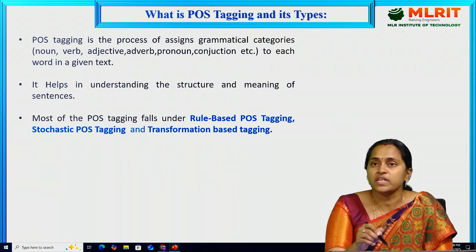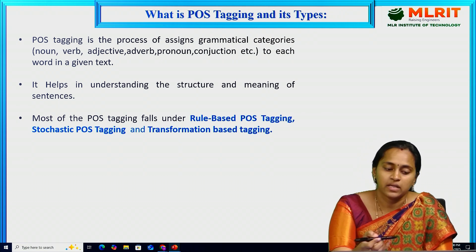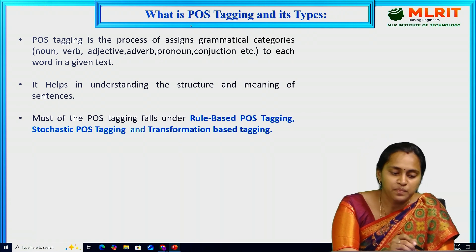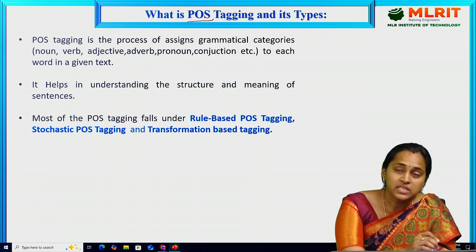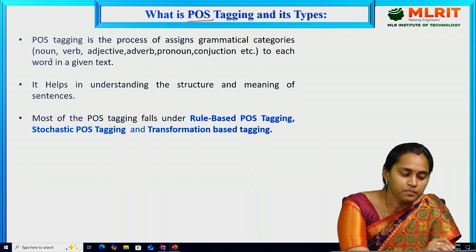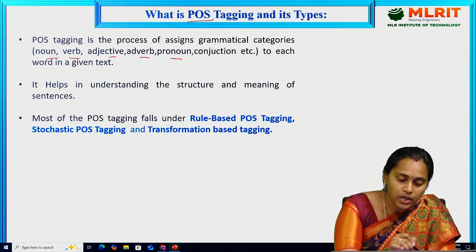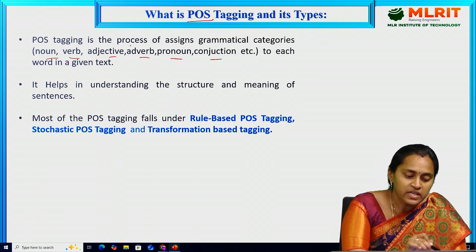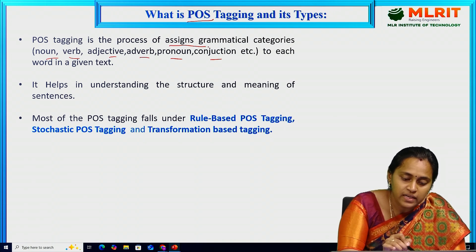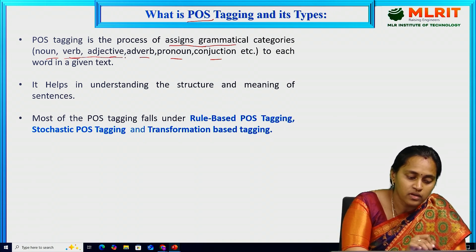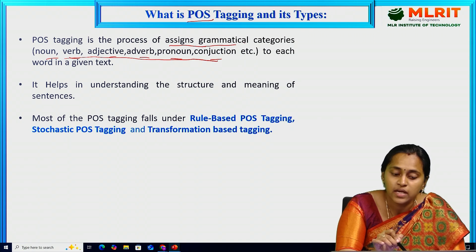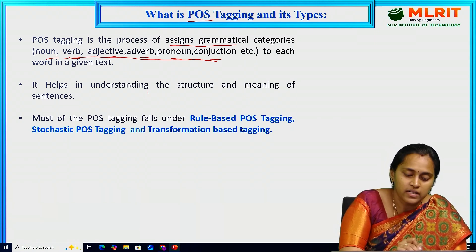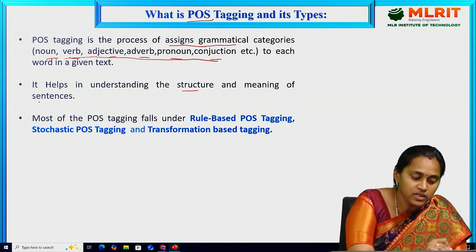So what is the POS tagging meaning? POS tagging means parts of speech tagging — that means we are assigning the noun, verb, adjective, adverb, pronoun, conjunction to the words in the sentences. It is a process of assigning grammatical categories. These types of POS tags are called grammatical categories. It helps understand the structure and meaning of the sentences.